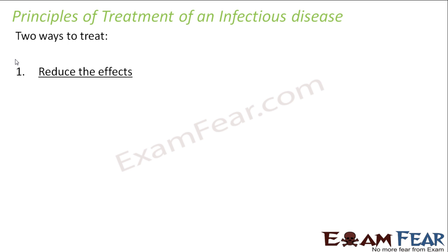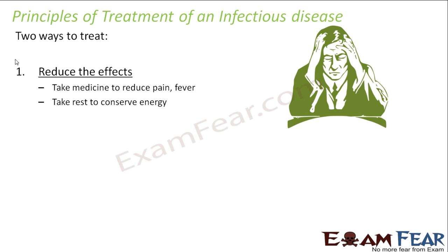The first principle is to reduce the effects. Whenever a disease happens, as soon as there is an infection inside your body, inflammation occurs — the cells of the body start fighting back. As a result, you get symptoms like fever, pain, and swelling. You can take medicines to reduce pain or fever, or you can take rest to conserve energy, allowing your immune system to fight back with more strength.